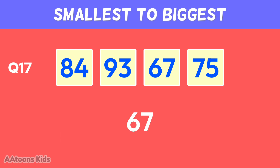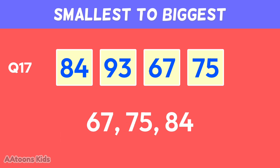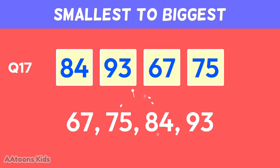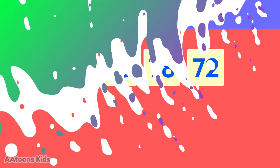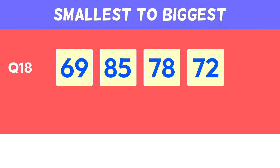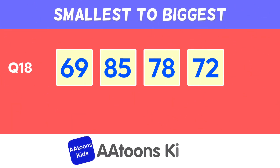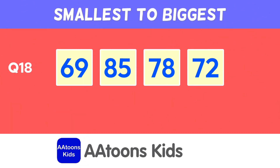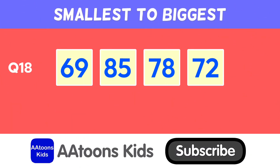Arrange these numbers from smallest to biggest: sixty-seven, seventy-five, eighty-four, ninety-three.